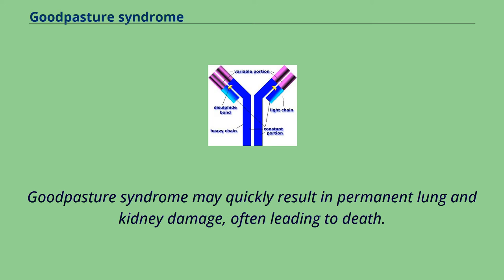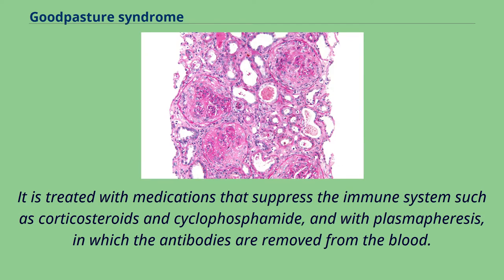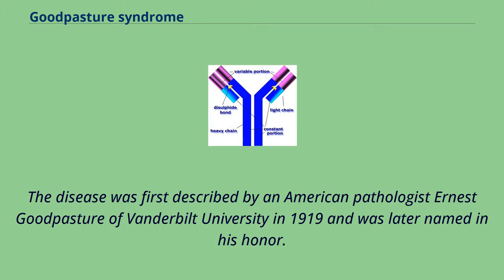Goodpasture syndrome may quickly result in permanent lung and kidney damage, often leading to death. It is treated with medications that suppress the immune system such as corticosteroids and cyclophosphamide, and with plasmapheresis, in which the antibodies are removed from the blood. The disease was first described by American pathologist Ernest Goodpasture of Vanderbilt University in 1919 and was later named in his honor.